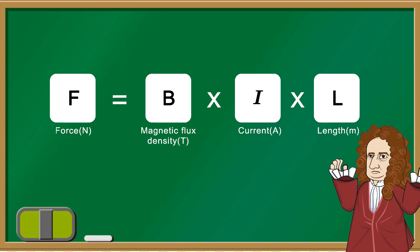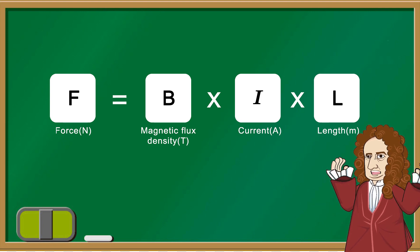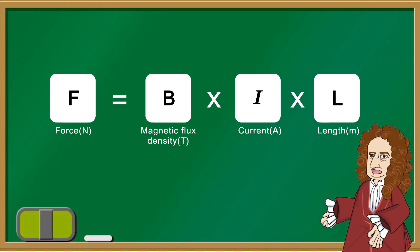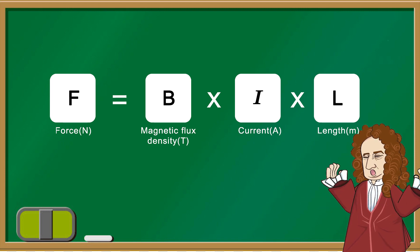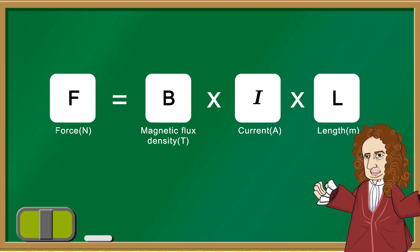So, right now, we can conclude that three parameters affect the size of the electromagnetic force. These parameters are the magnetic flux density, a current of carrying conductor, and the length of the conductor.